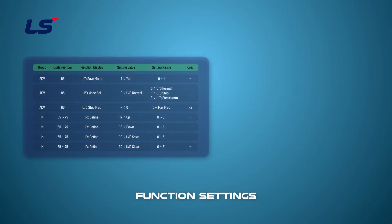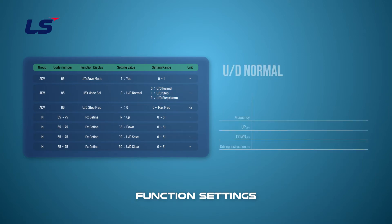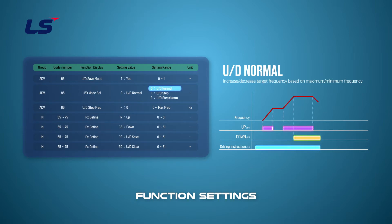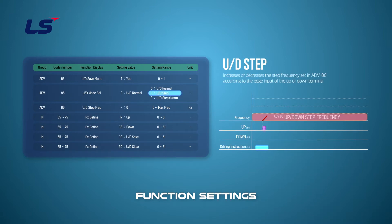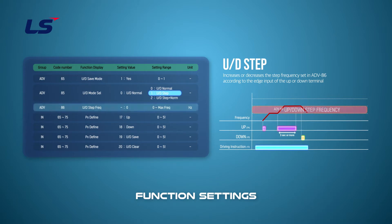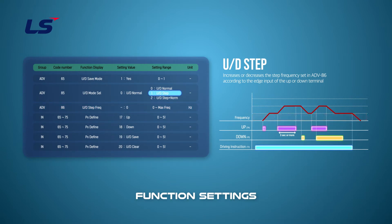Next, let's take a look at three operation modes of the Up-Down function. The first mode is Normal mode, which accelerates when the Up digital input is on and decelerates when the Down is on. The second mode is Step mode, which accelerates or decelerates by the frequency programmed in the Up-Down step frequency parameter, ADV 86.